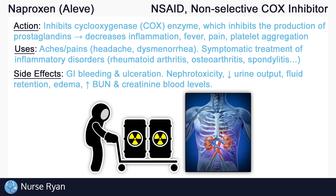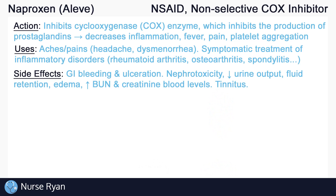Naproxen, especially with long-term use, can have negative effects on the renal system, or the kidneys. NSAIDs are commonly associated with nephrotoxicity, which may present as decreased urine output, fluid retention or edema, and increases in creatinine and BUN blood levels, and more. Also, with high doses or long-term use of naproxen, tinnitus or ringing in the ears may occur.